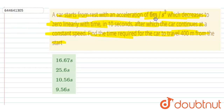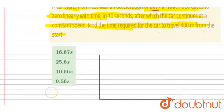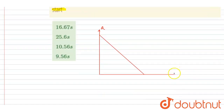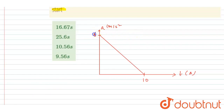The car starts with an acceleration that decreases from 6 to 0 in 10 seconds. If I draw the curve of acceleration versus time, the acceleration decreases from 6 to 0 in 10 seconds. The slope of this line is minus 6 by 10, which is minus 3 by 5.